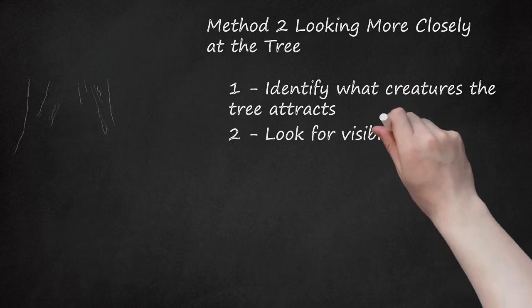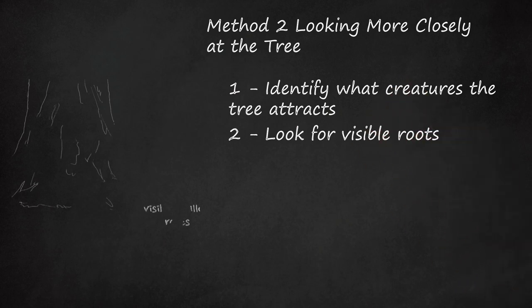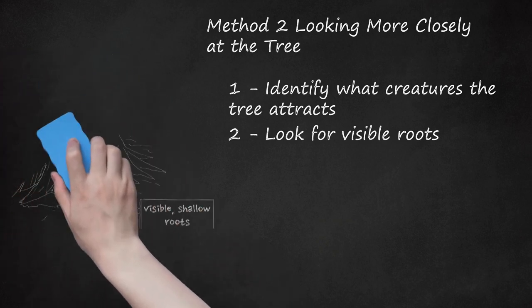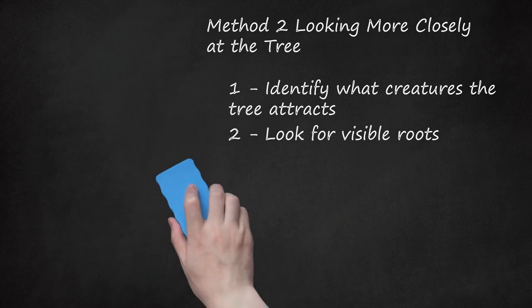2. Look for Visible Roots. The base of an elm is reinforced with a visible, shallow root system with a broad reach. The bark of the roots will have the same general texture and color as the bark on the rest of the tree. While it might not be present in young elms, look for roots that are visible along the ground.